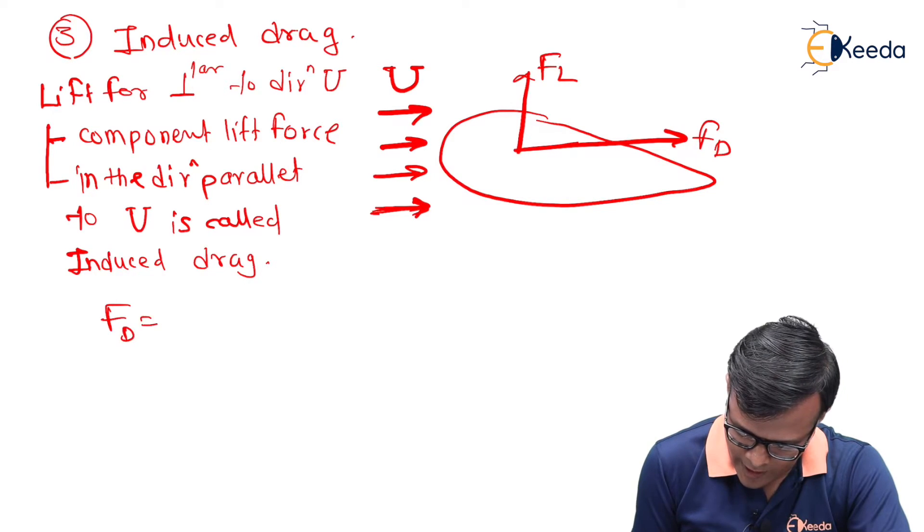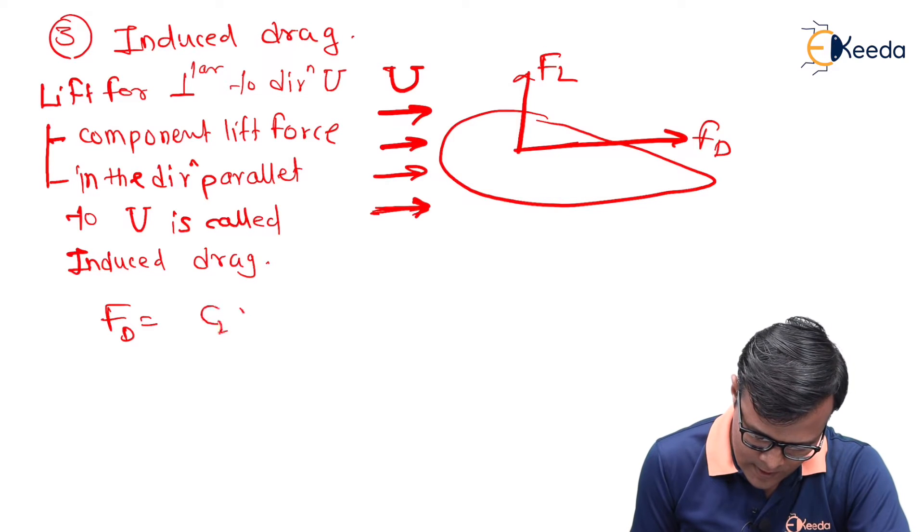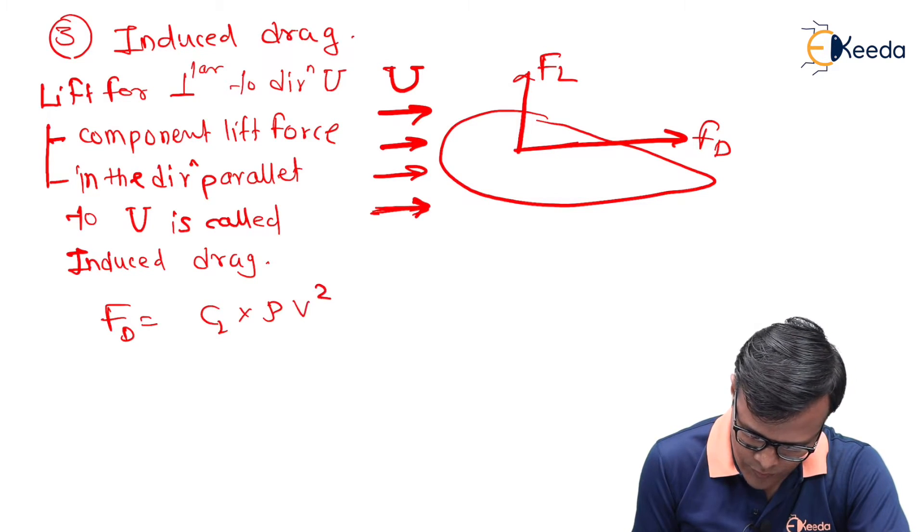So induced drag can be calculated as CL into rho v square upon...